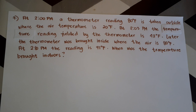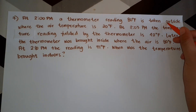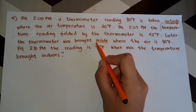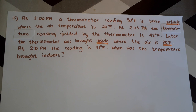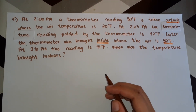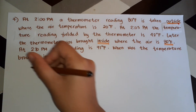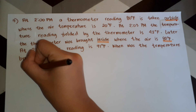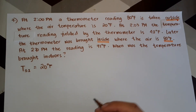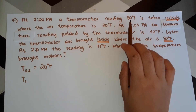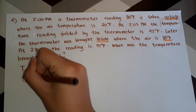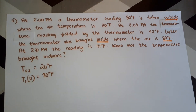We have two environments in our problem. The first environment is outside where the temperature Ts1 is 20 degrees Fahrenheit. The second environment is inside where the air temperature is 80 degrees Fahrenheit. Now we write the given values. At 2 PM, which will be our time zero, the thermometer reading is 80 degrees Fahrenheit.